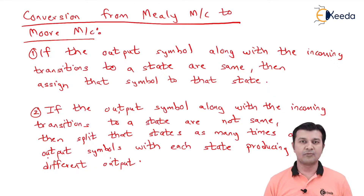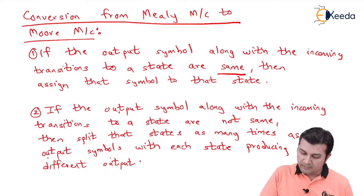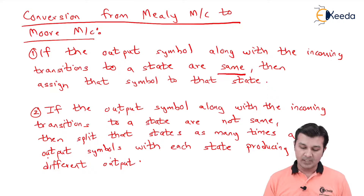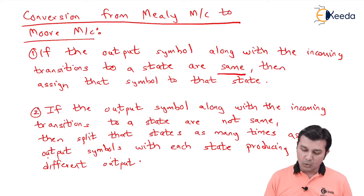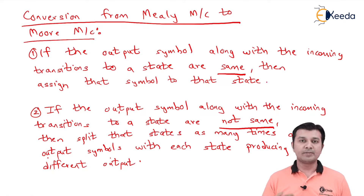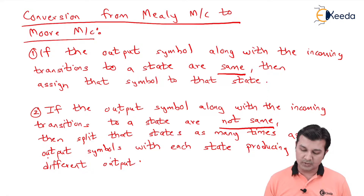We have a total of three steps to be followed. Step number one says if the output symbol along with the incoming transitions to a state are the same, then assign that symbol to that state. Step two says if the output symbol along with the incoming transitions to a state are not the same, then we are going to split that state as many times as the number of distinct output symbols, with each split state producing a different output.